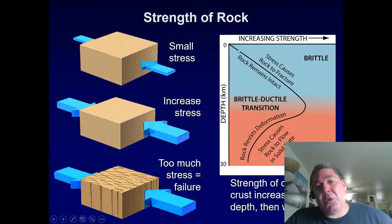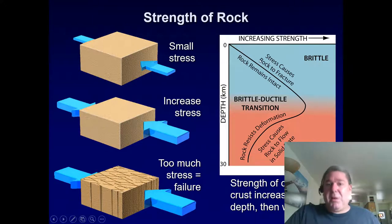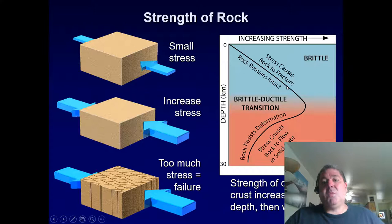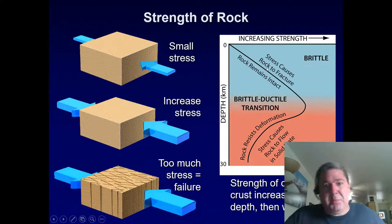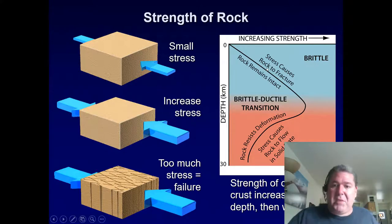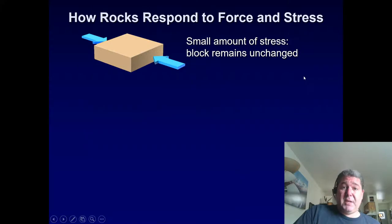This line here is our failure envelope. As we go deeper in the Earth, heat and pressure increase, but the rock can withstand a little more pressure at depth because it has more confining pressure around it. Pass that envelope, and you cause deformation.